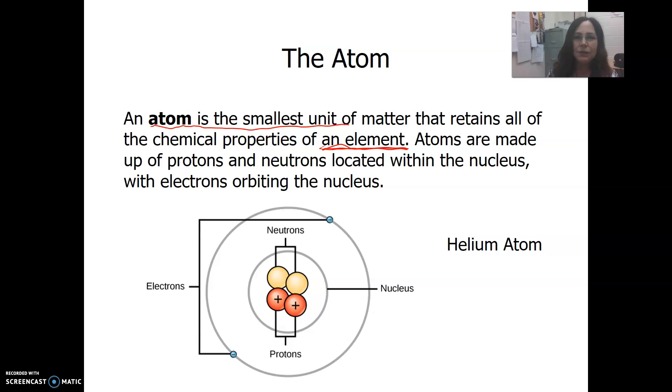There are protons and neutrons, which are located inside the nucleus of the atom. Here you see a helium atom shown. The helium atom, abbreviation He, has two neutrons and two protons. Protons have positive charges. Helium also has two electrons, and those have negative charges.